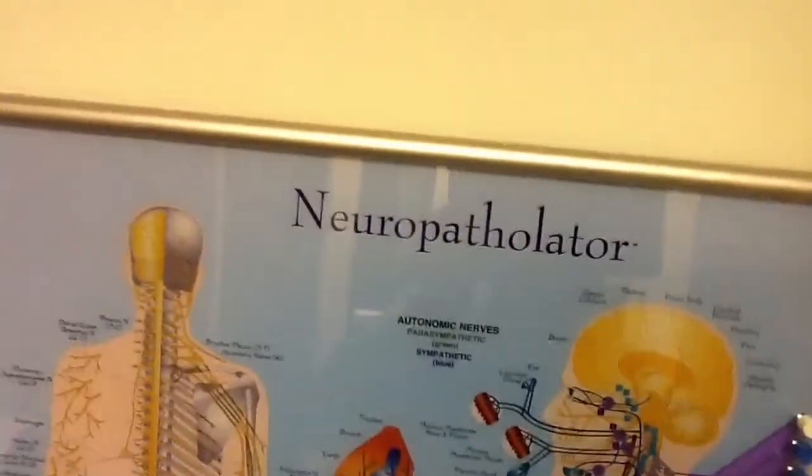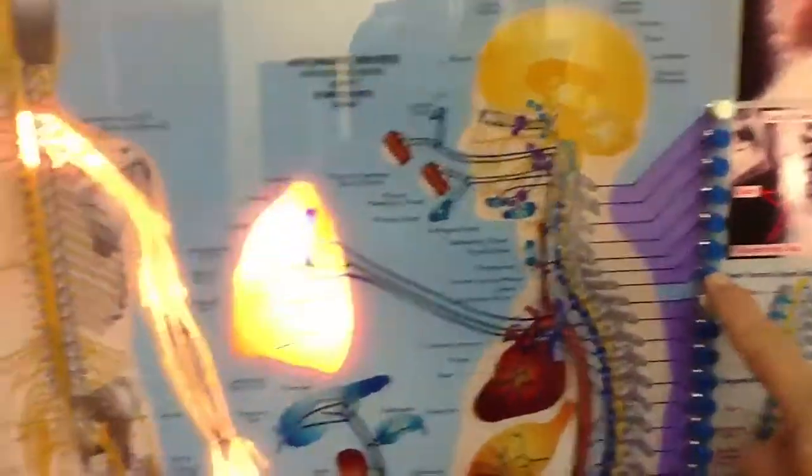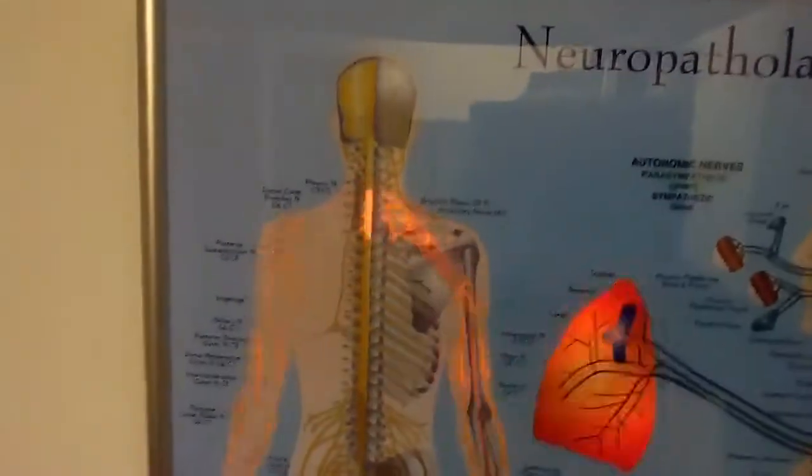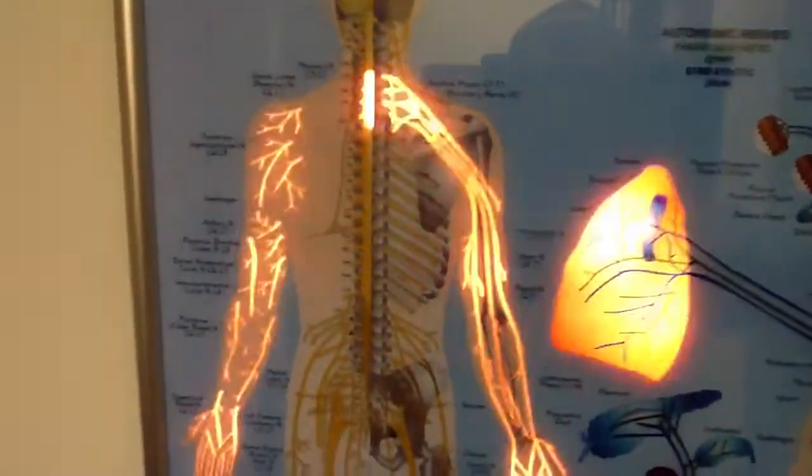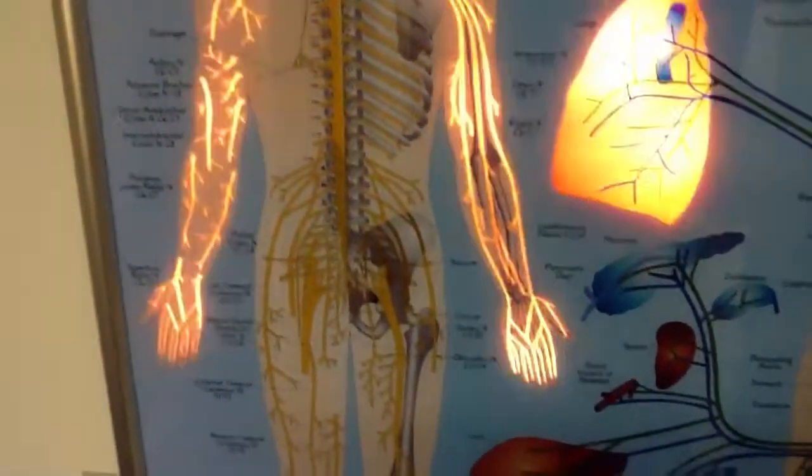Let's go ahead and push the buttons on this one and see what lights up. Now look at this. Once again, the arms, the shoulder, upper arm, lower arm, forearm, hands, fingers can all be affected.